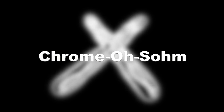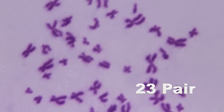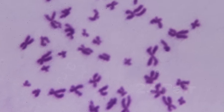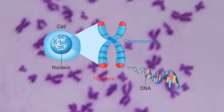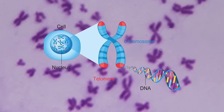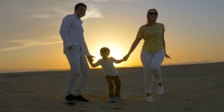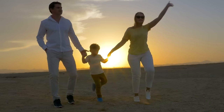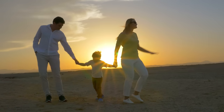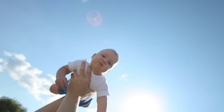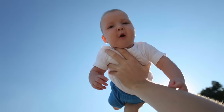Chromosomes. A complete set of 23 pairs of chromosomes, structured like X's and Y's, fit nicely into every cell. And this is what identifies your physical traits — traits from your mother and traits from your father. And this is what makes you unique.